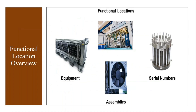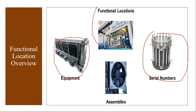In our customer service module, the technical objects we discussed are equipment and serial numbers, and today we are covering functional location. Functional location is created in the customer service module to represent your customer location structure. We are selling equipment to the customer and we want to see where that equipment is exactly available at the customer location — different manufacturing facilities, distribution centers, HR offices in different countries and cities. We want to track where exactly that product we sold is located, so we create a customer location hierarchy as a functional location.